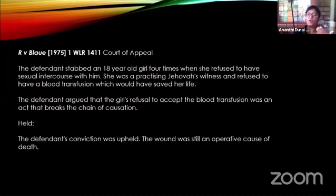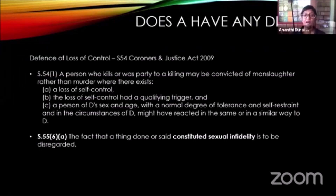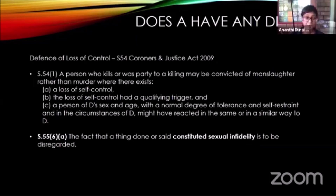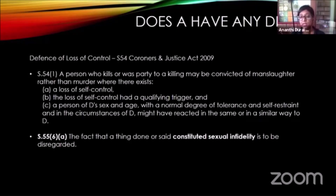Now what are we looking for? Are there any defences? Why did he stab C? Because he came home and saw C in bed with his wife — clearly they were doing the dirty. So we look at the defence of loss of control, which is clearly what happened: he was provoked into stabbing C. Section 54 of the Coroners and Justice Act deals with that defence.